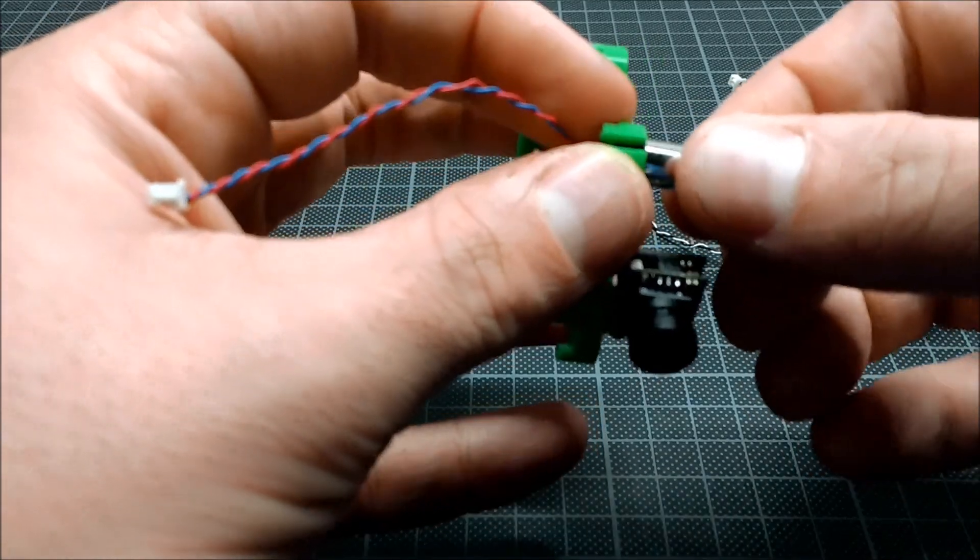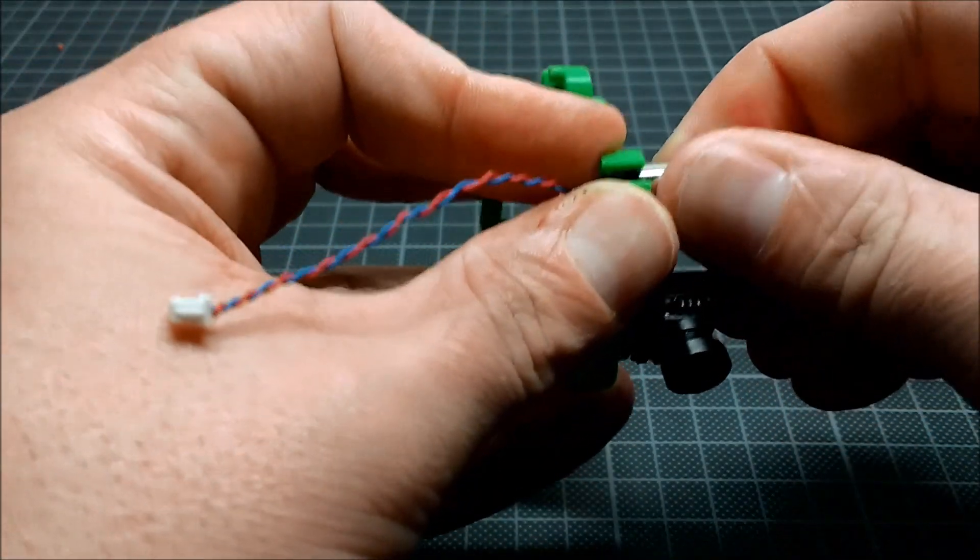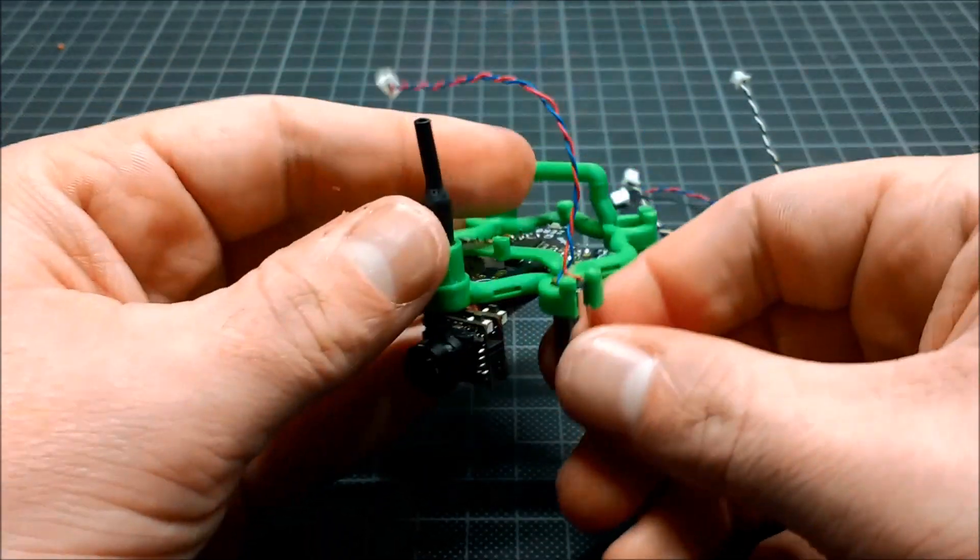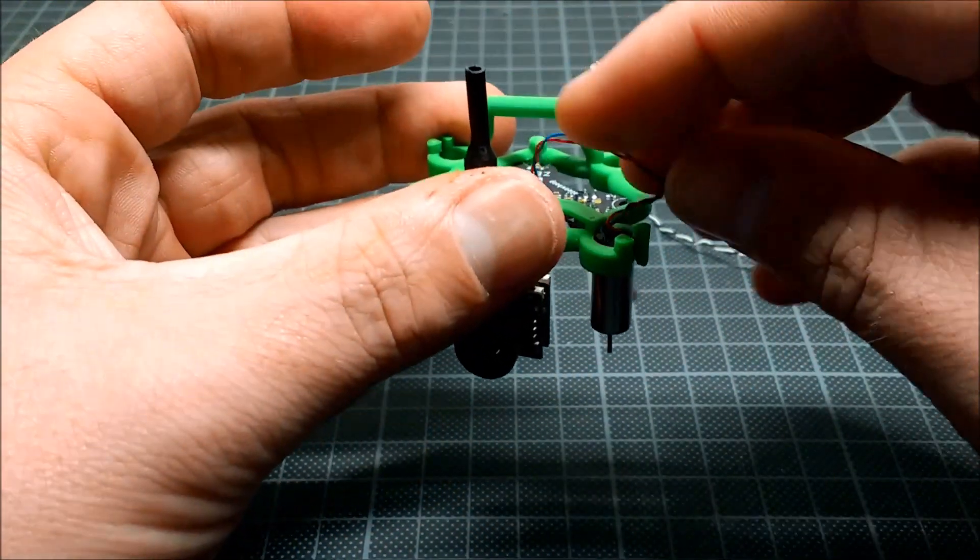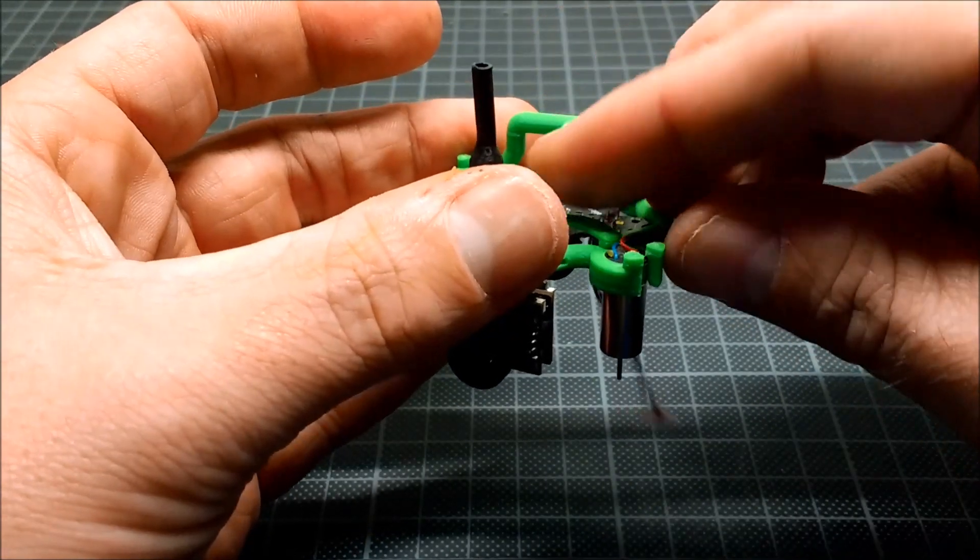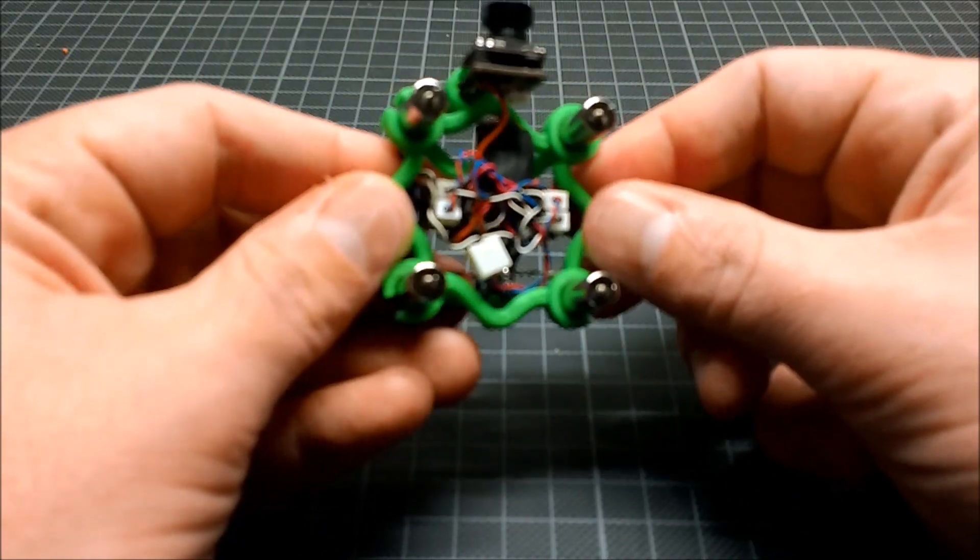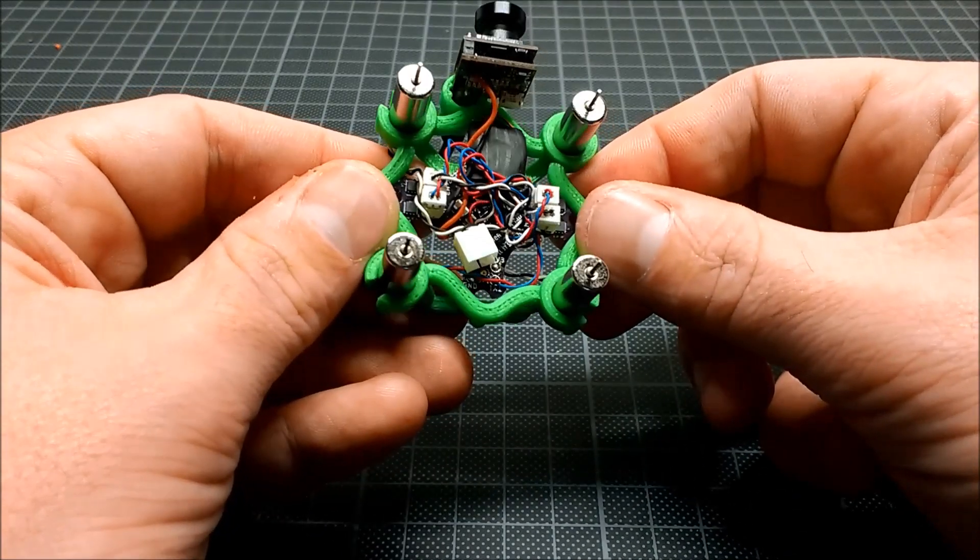The motors are press-fitted in their mounts. Three little overhangs on top of each motor mount prevent the motors from going too far in. All motors are now installed. You see where we are heading to?